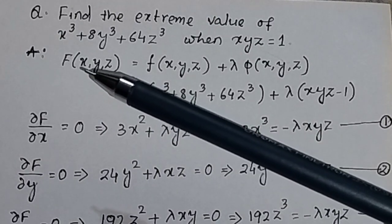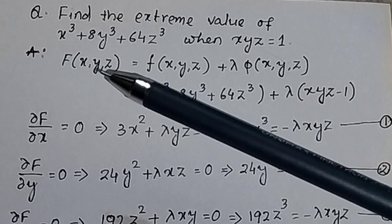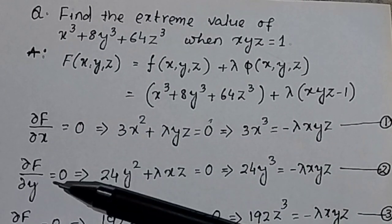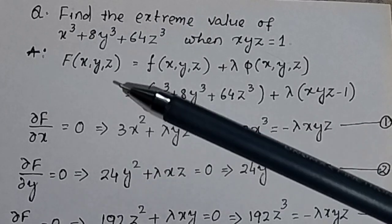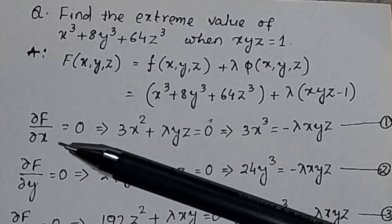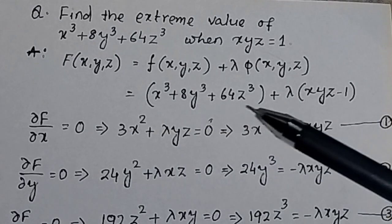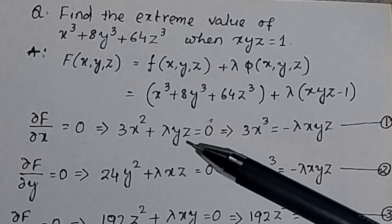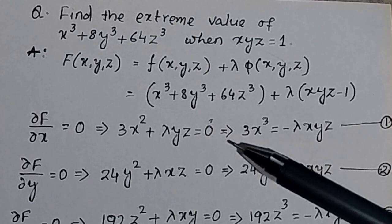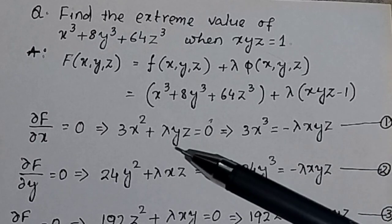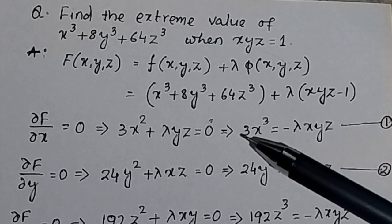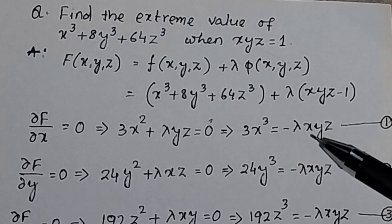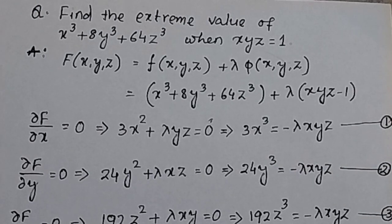To solve the Lagrange equation, take the partial derivative of the Lagrange function first with respect to x, then y, then z. Taking the partial derivative with respect to x gives 3x² + λyz = 0, so 3x² = −λyz. Multiplying both sides by x gives 3x³ = −λxyz. This is equation number 1.